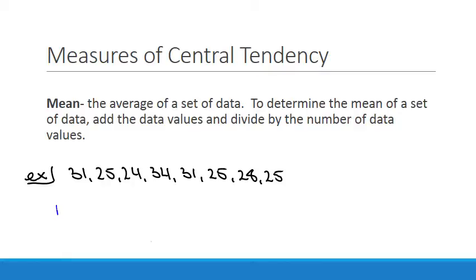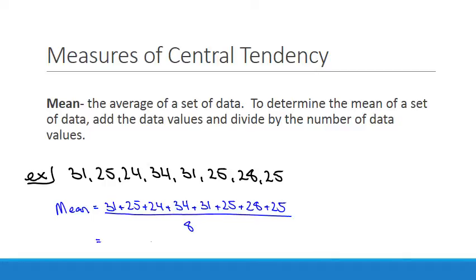So my mean will be equal to 31 plus 25 plus 24 plus 34 plus 31 plus 25 plus 28 plus 25, all divided by 8. If I add all that up and divide by 8, I get 27.88. That is how you find a mean.